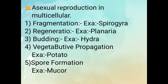Asexual reproduction in multicellular organisms: First: Fragmentation — for example, Spirogyra. Second: Regeneration — for example, Planaria. Third: Budding — for example, Hydra. Fourth: Vegetative Propagation — for example, Potatoes. Fifth: Spore Formation — for example, Mucor.